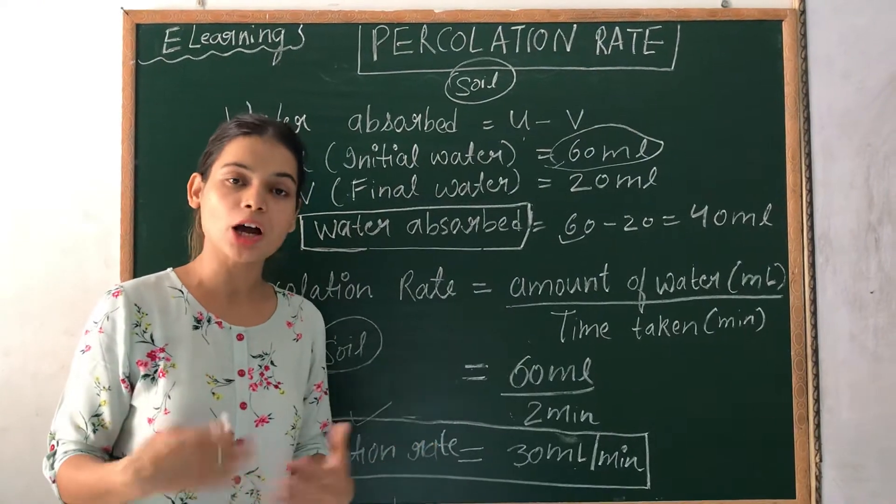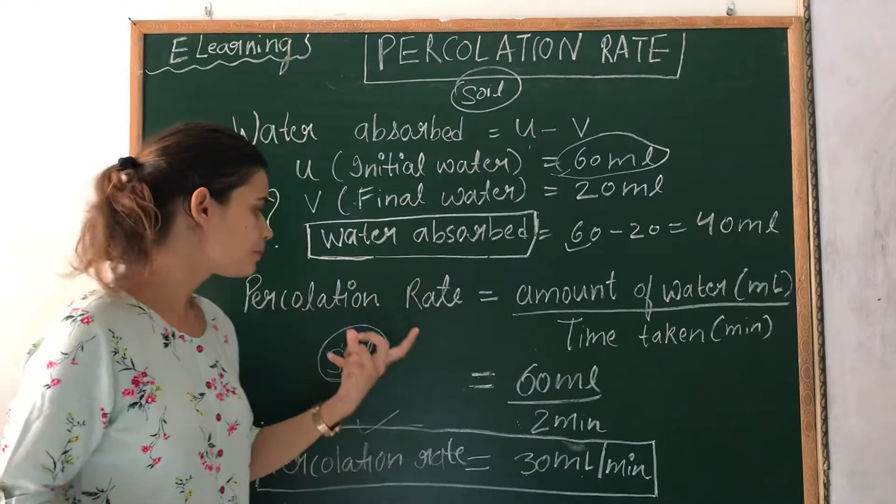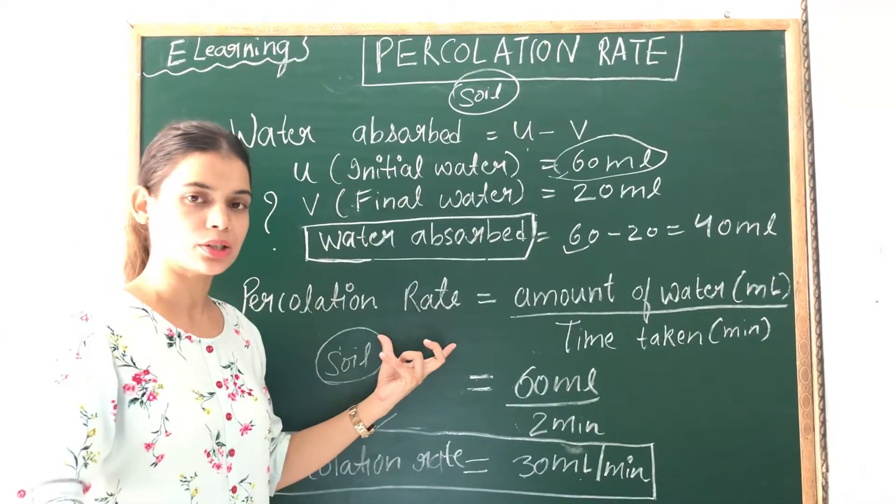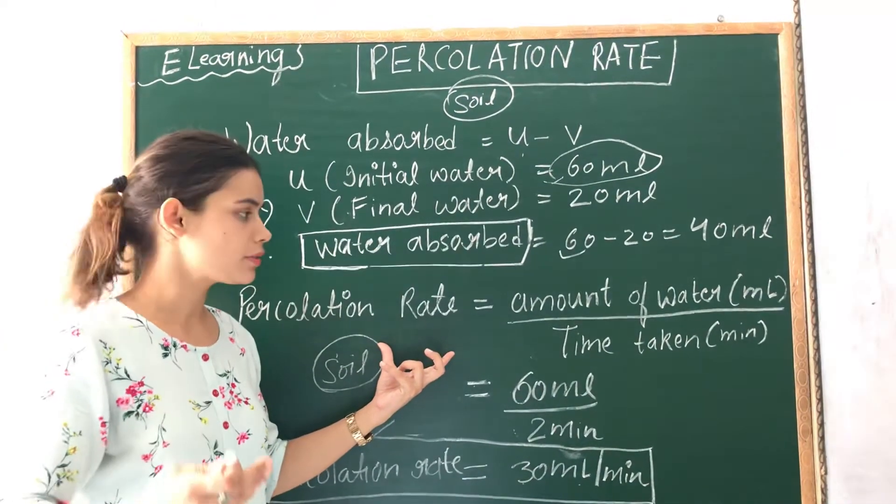Now, what is the percolation rate and how can we find it out? Percolation rate is the speed at which water percolates, at which water passes through the given soil.